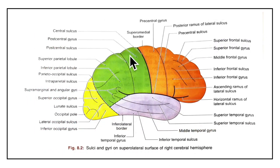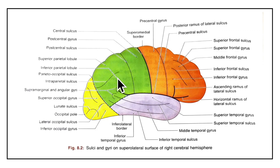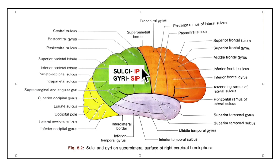Now let's learn about the sulci and gyri of the parietal lobe. We have two sulci and three gyri. The sulci are: the post-central sulcus and the intra-parietal sulcus. The gyri are: the post-central gyrus, the superior parietal lobule and the inferior parietal lobule. A mnemonic for the sulci is IP — I for intra-parietal, P for post-central. For the gyri, use SIP — S for superior parietal lobule, I for inferior parietal lobule, P for post-central gyrus.